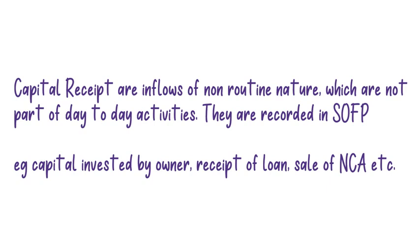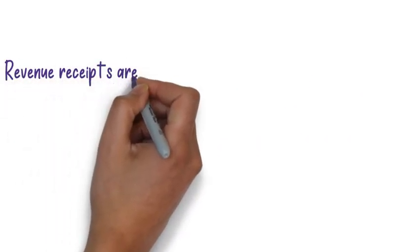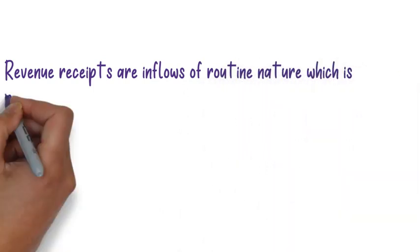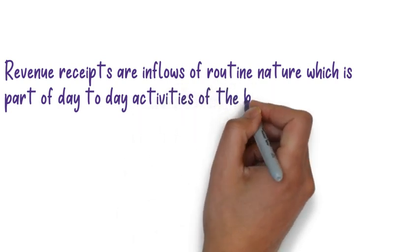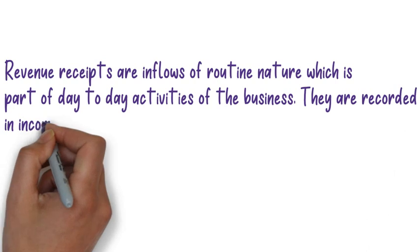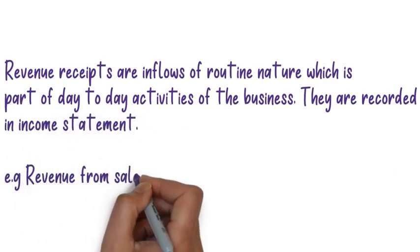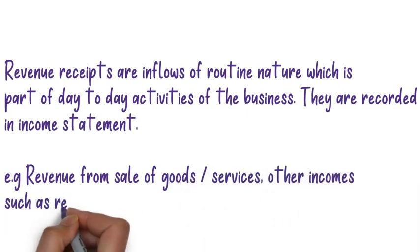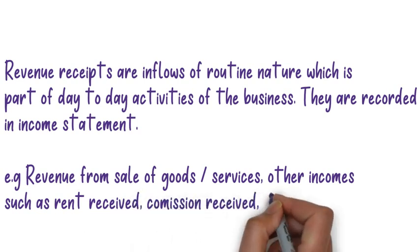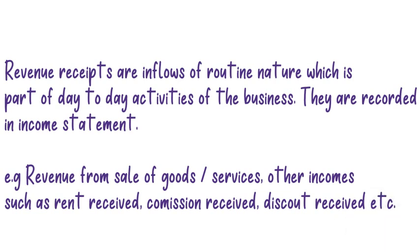Revenue receipts are also inflows of the business, but they are of a routine and recurring nature — part of the day-to-day activities. Examples include revenue from the sale of goods and services to customers, and income such as rent received, commission received, or discount received, as these come into the business more often. I hope you were able to understand the differences between revenue and capital expenditure and receipts. Do subscribe to the channel for future videos.